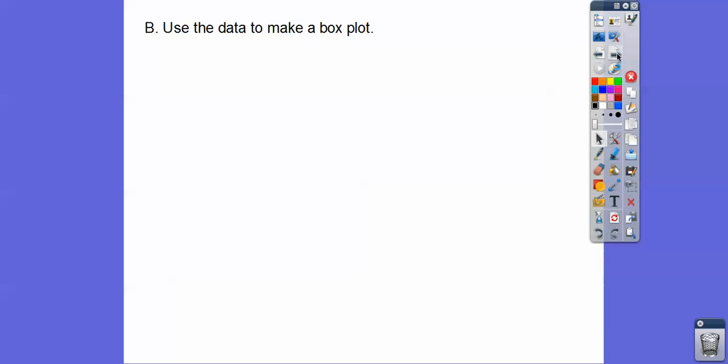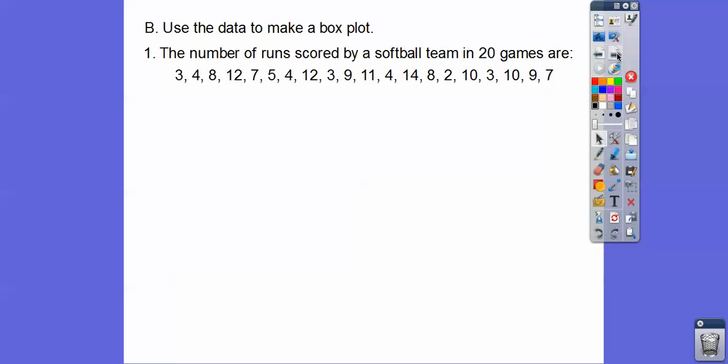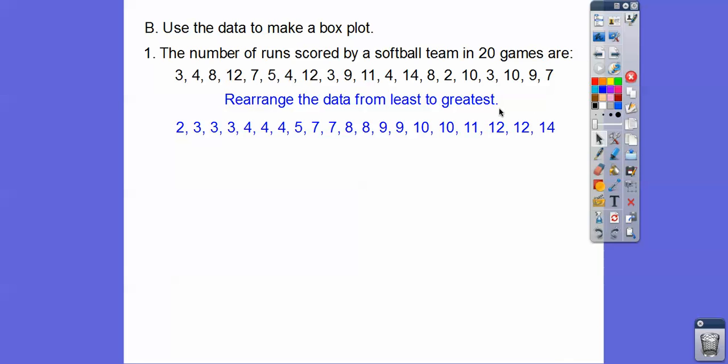We're going to use the data here to make a box plot. The number of runs scored by a softball team in 20 games are given below. We have to rearrange them in order so we can find the quartiles, the min, and the max. So there they are rearranged. Here's the min, here's the max.